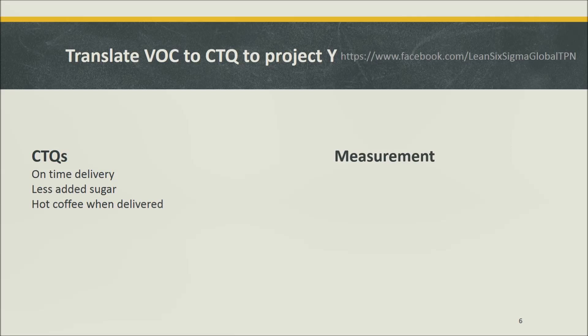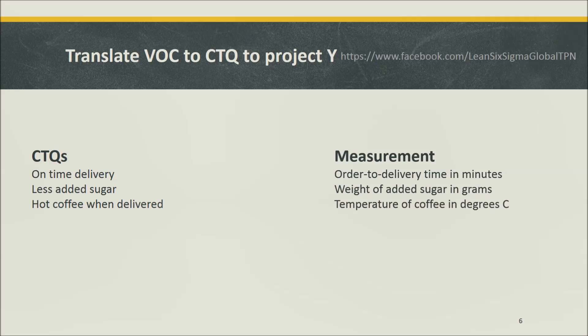These CTQs can be measured by: order-to-delivery time in minutes, weight of added sugar in grams, and temperature of coffee in degrees Celsius. We can specify how the process must perform on these metrics in order to satisfy customers. In this example, CTQ specifications may be: delivery time in 20 minutes or less, weight of added sugar less than 2 grams, and coffee temperature not falling below 30 degrees Celsius.